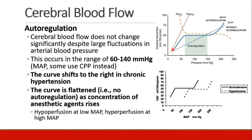The solid blue line is the normal autoregulation curve. The curve becomes flattened — meaning we lose autoregulation — as the concentration of anesthetic agents rises, demonstrated by the dotted blue line. Without anesthesia, whether blood pressure is low or high, the brain gets a constant amount of cerebral blood flow. But when we add anesthesia and lose autoregulation, at low blood pressures the brain is hypoperfused, and at high blood pressures the brain is hyperperfused.